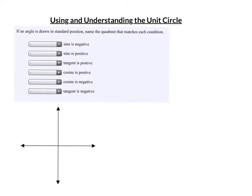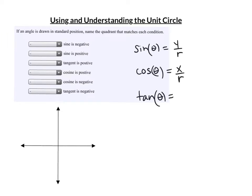Understanding and using the unit circle. First thing I want to say is if you did not watch the video on explaining the unit circle, you need to stop right now, go back and watch that. It's a little long but it gives you all the background information. These are examples right from your assignment. Remember that the sine of an angle theta is y over r, the cosine is x over r, and the tangent is y over x.